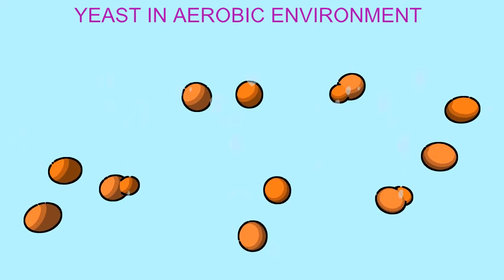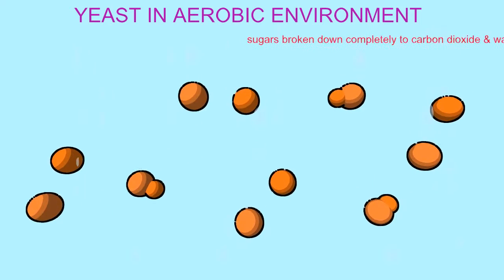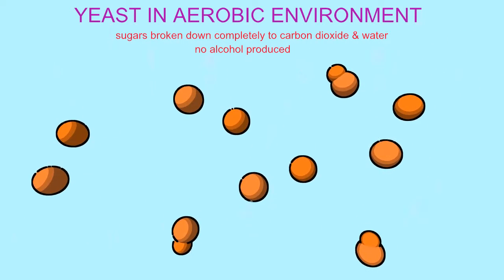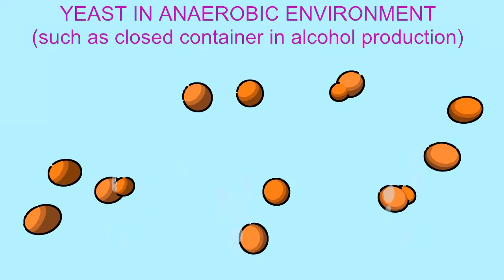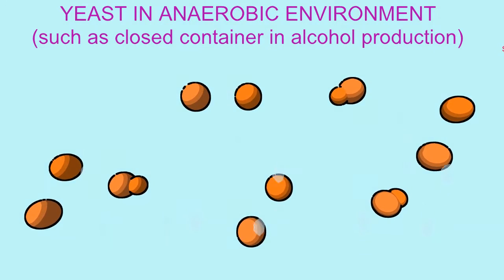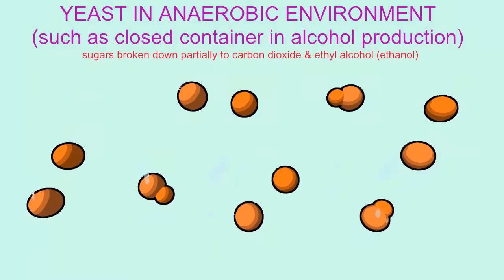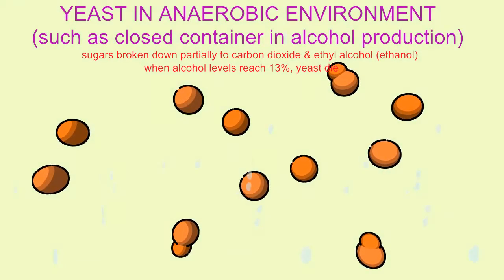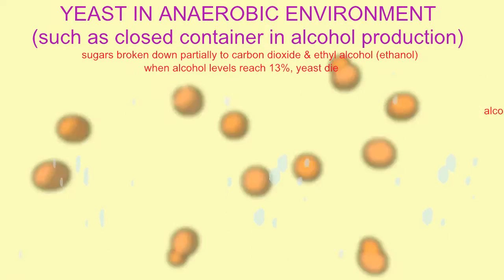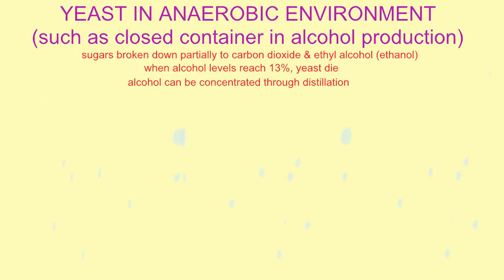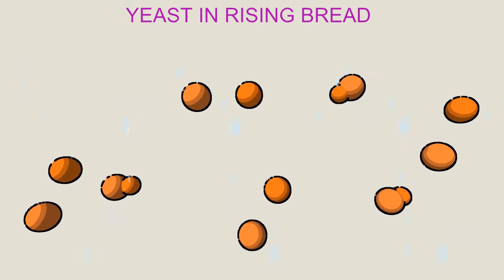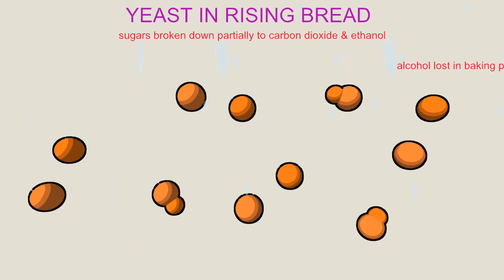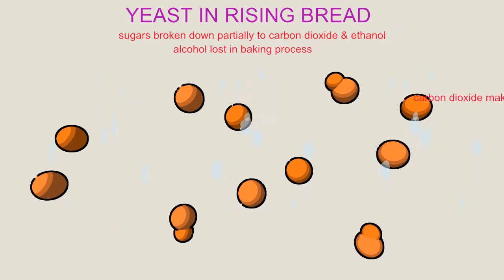They use oxygen to produce energy, but can survive without oxygen, and thus are facultative anaerobes. As such, they can produce alcohol as a waste product, which is important in the production of alcoholic beverages, and also in the rising of bread and cake, because the carbon dioxide produced causes the bread to rise and the alcohol is burned off.